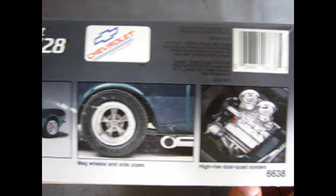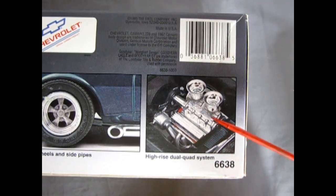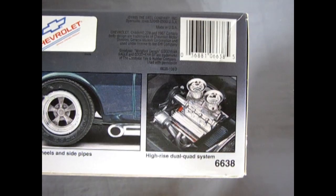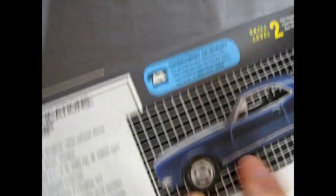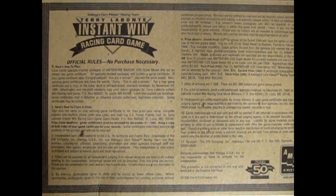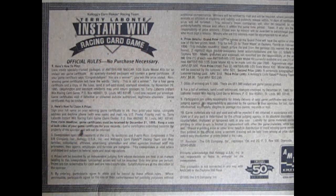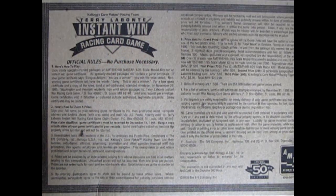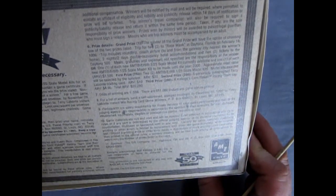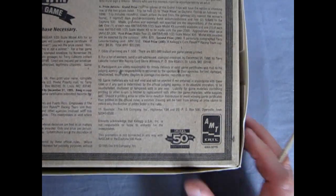There's our mag wheel and side pipes and there's our engine with the high rise dual quad carburetor system and blower. So pretty cool stuff for this. There's a cool detail I just discovered on the bottom of the box - instant win racing card game. This was Terry Labonte for the 50th anniversary. 50th anniversary of Ertl. So there you go. This is quite a cool kit.